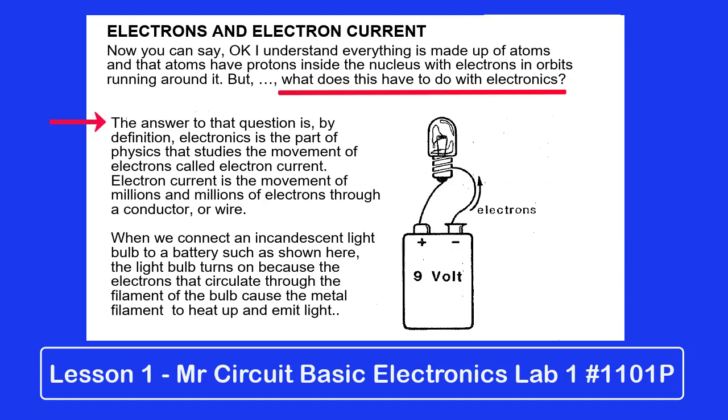The answer to that question is, by definition, electronics is the part of physics that studies the movement of electrons, called electron current. Electron current is the movement of millions and millions of electrons through a conductor or a wire.